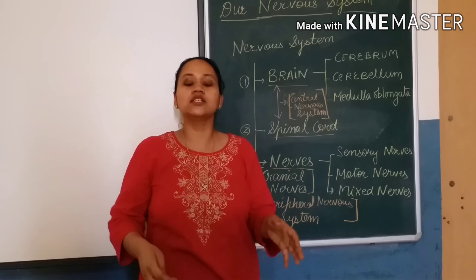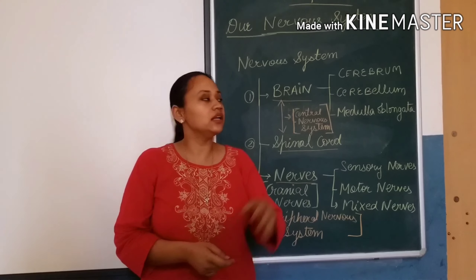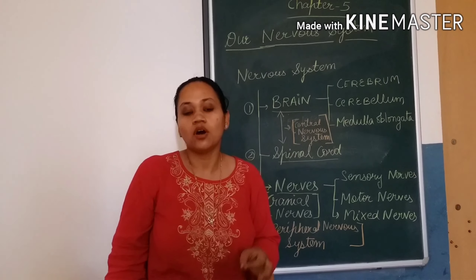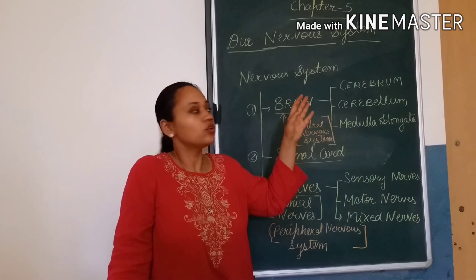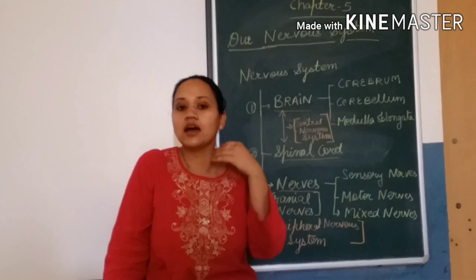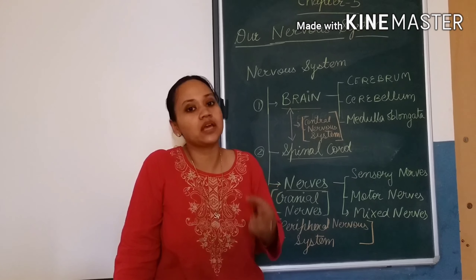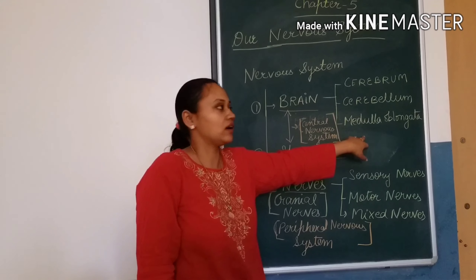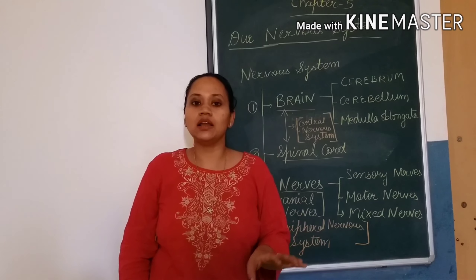On the principal's order, the next level communicates and works, similarly the nervous system works. The brain is the master computer and acts as the boss of our body. The brain is divided into three parts: cerebrum, cerebellum, and medulla oblongata.